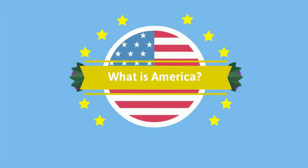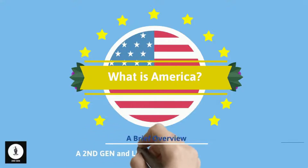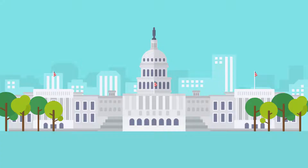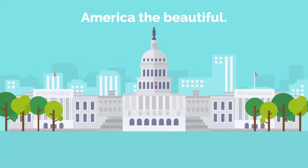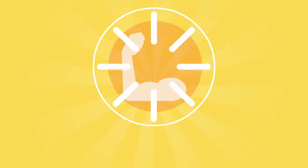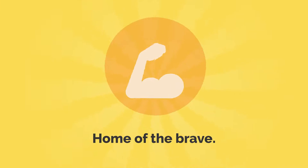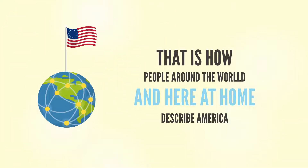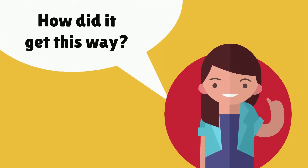What is America? A brief overview of America as it exists today. A second-gen and liberated panda production. America the beautiful, land of the free, home of debris. That is how people around the world and here at home describe America. But how did it get this way?